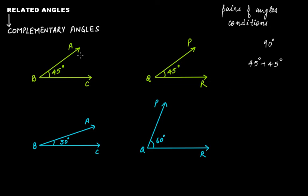So we say that this pair of angles — angle ABC and angle PQR — are complementary angles. Angle ABC is the complement of angle PQR, and angle PQR is the complement of angle ABC. Both these two angles are complement to each other.